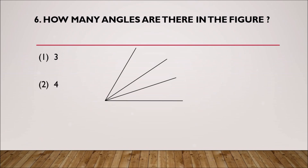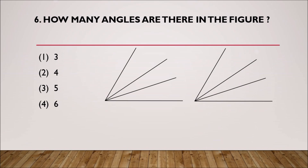Options: 2 angles, 5 angles, 6 angles. Here is the explanation. We have the 1st angle, 2nd, 3rd, 4th, 5th angle, and 6th. So altogether in this figure there are 6 angles. The 4th option, 6 angles, is the correct answer.